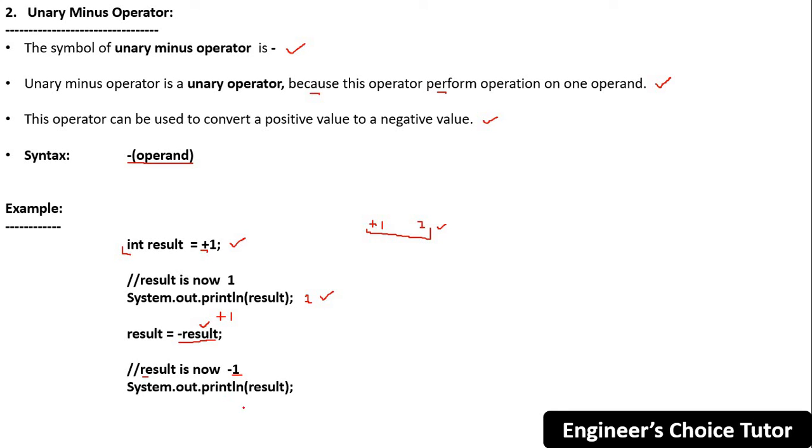So now if you will print, now the result is minus one. So if you will print this, you will get minus one on the console. As the output, minus one. So this is all about our unary plus and unary minus operator.